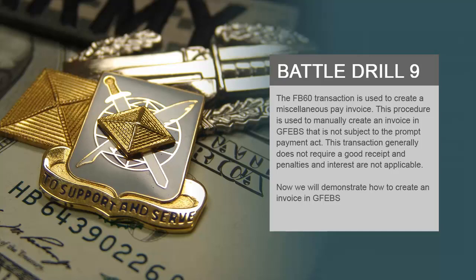The FB60 transaction is used to create a miscellaneous pay invoice. This procedure is used to manually create an invoice in GFIBS that is not subject to the Prompt Payment Act. This transaction generally does not require a goods receipt, and penalties and interest are not applicable. Now we will demonstrate how to create an invoice in GFIBS.